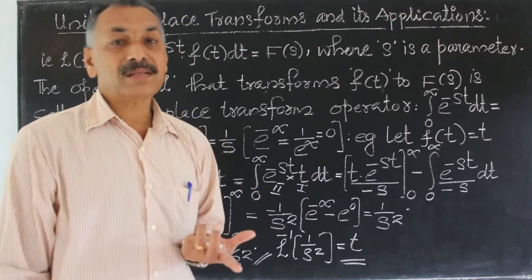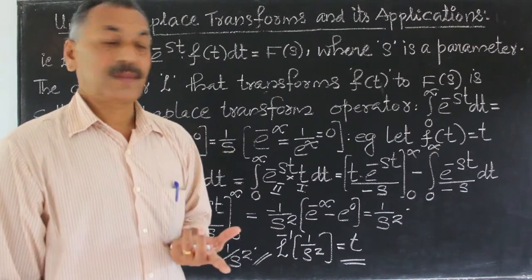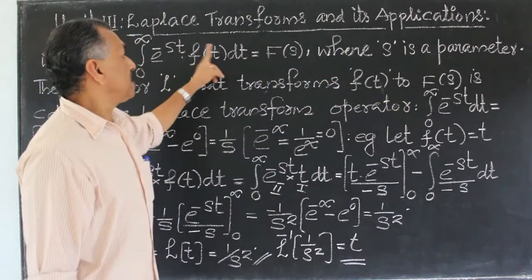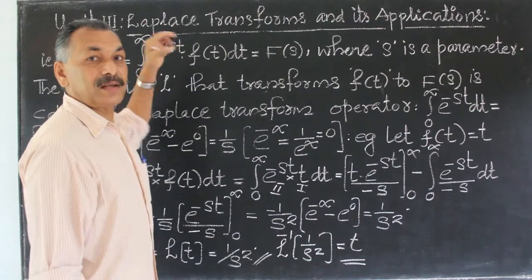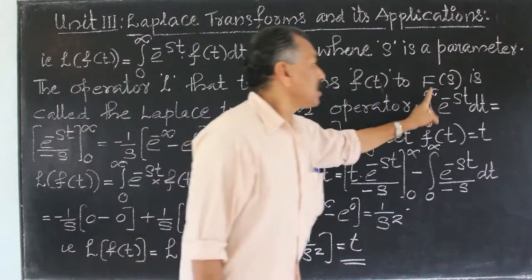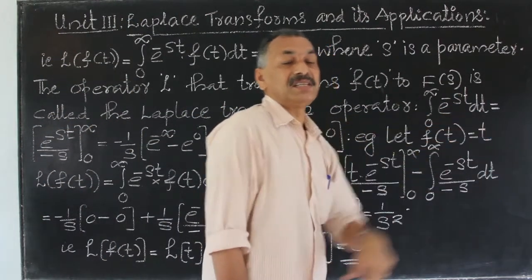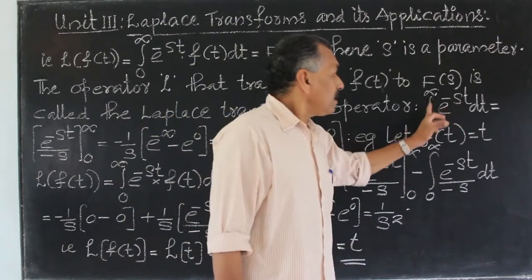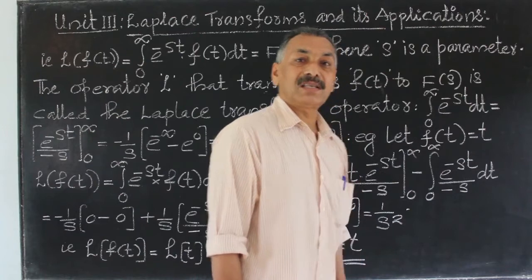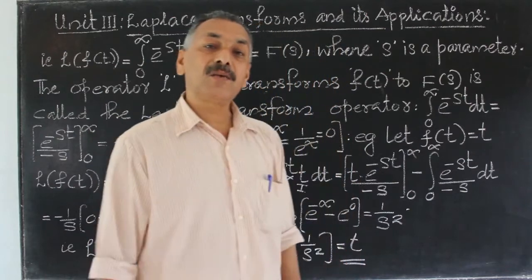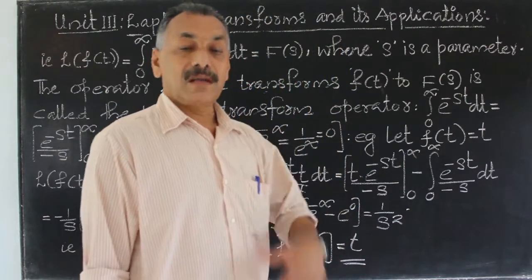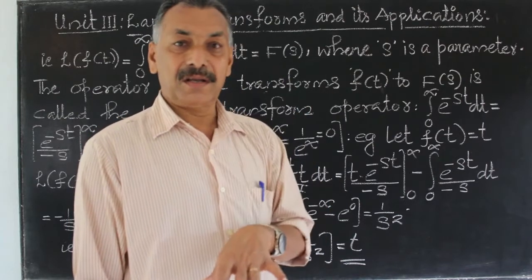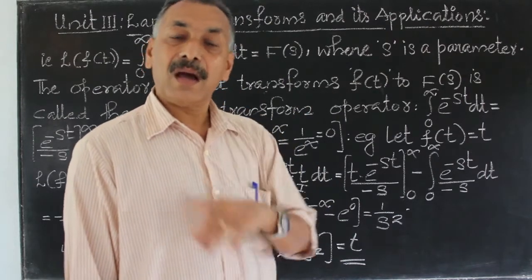To apply the Laplace transform operator L, you take a function f of t, multiply it by e raised to minus st, and integrate with the improper integral from 0 to infinity. That gives the Laplace transform value.